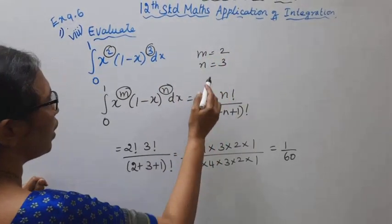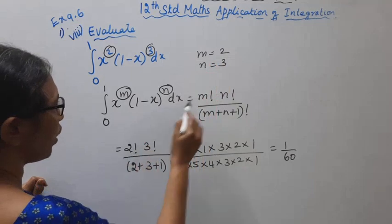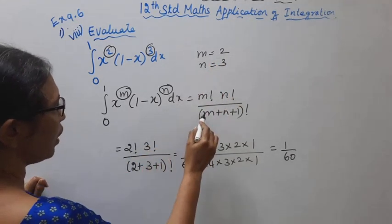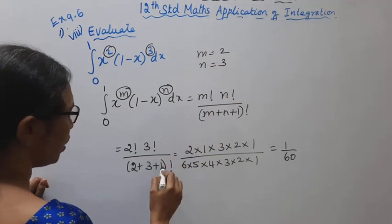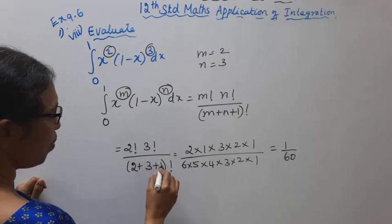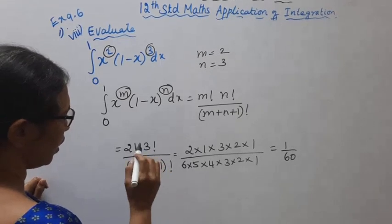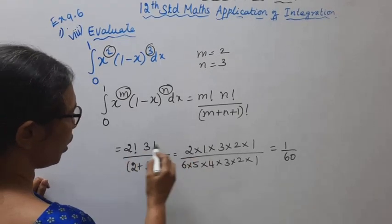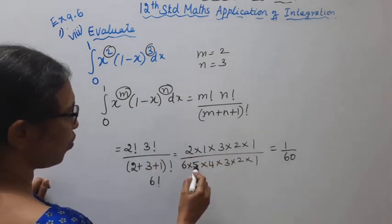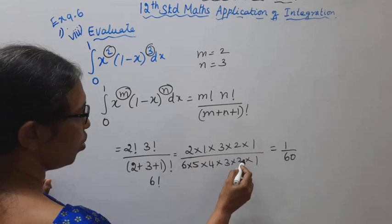That is, substitute 2 factorial, 3 factorial divided by 2 plus 3 plus 1 factorial. 2 plus 3 is 5, 5 plus 1 is 6 factorial. 2 factorial 2 into 1, 3 factorial 3 into 2 into 1, 6 factorial 6 into 5 into 4 into 3 into 2 into 1.